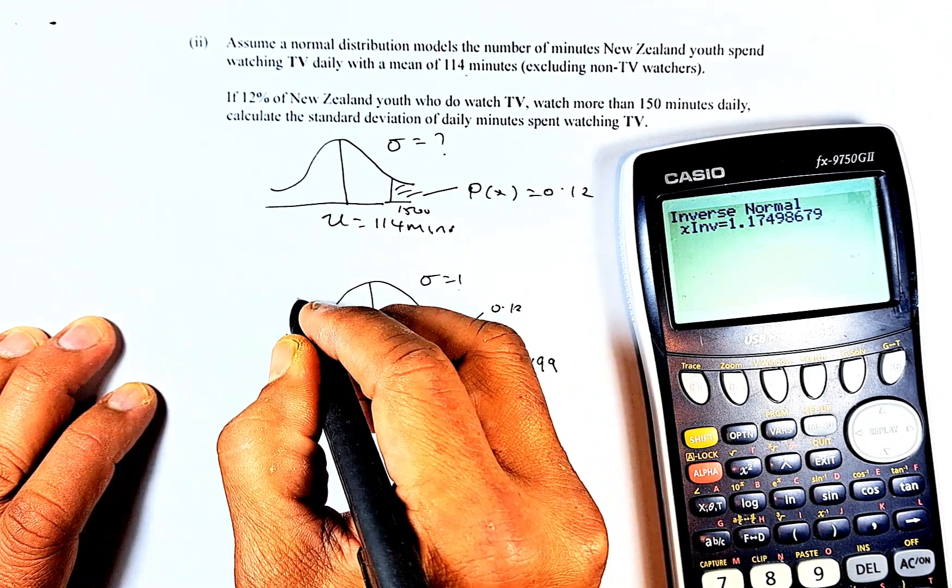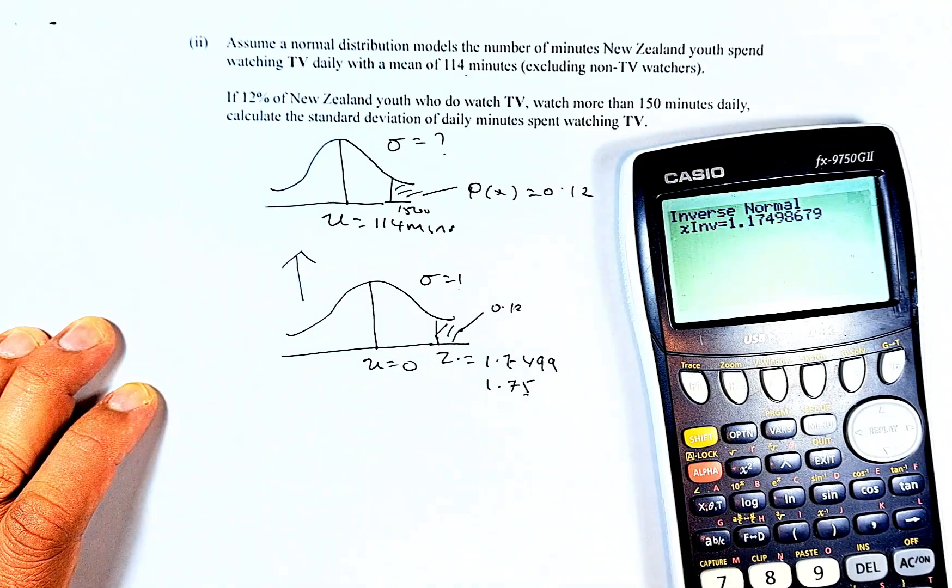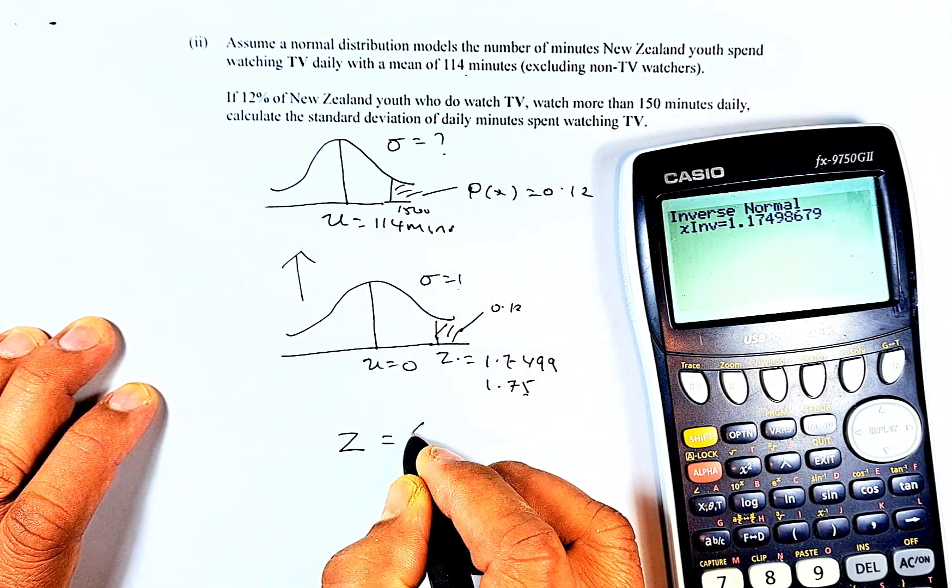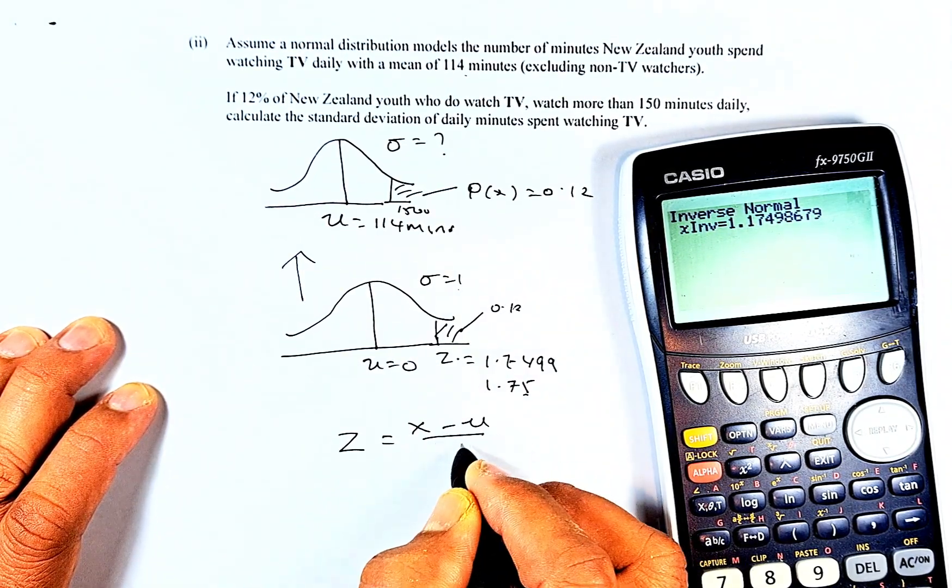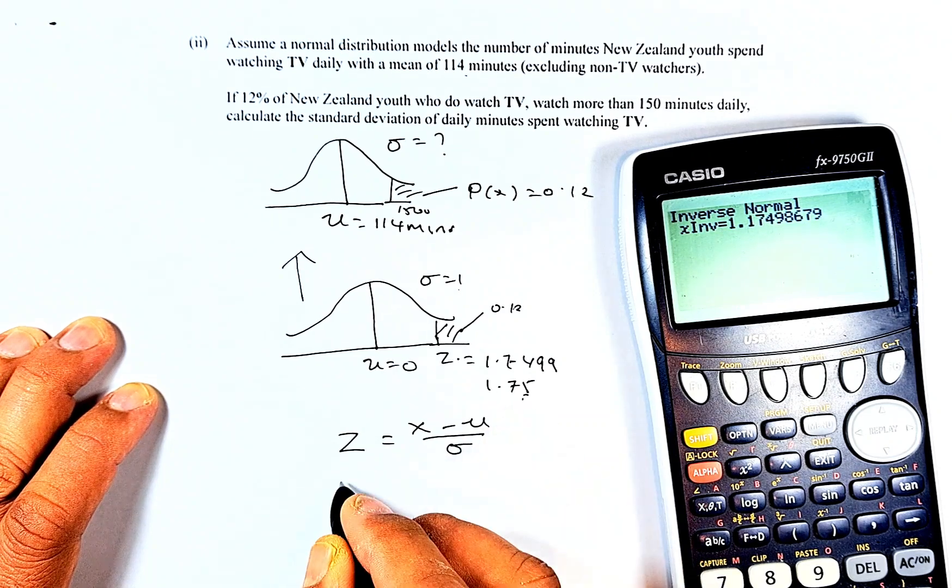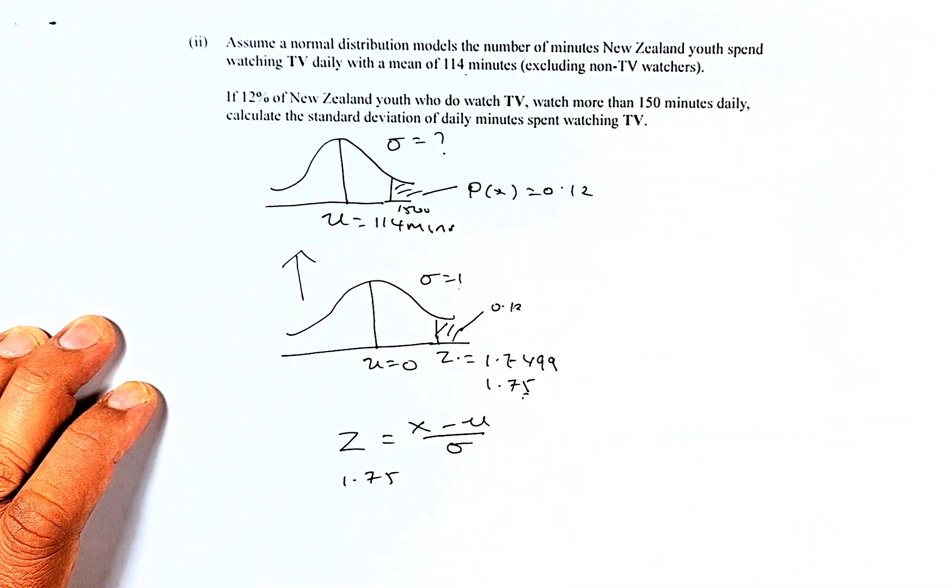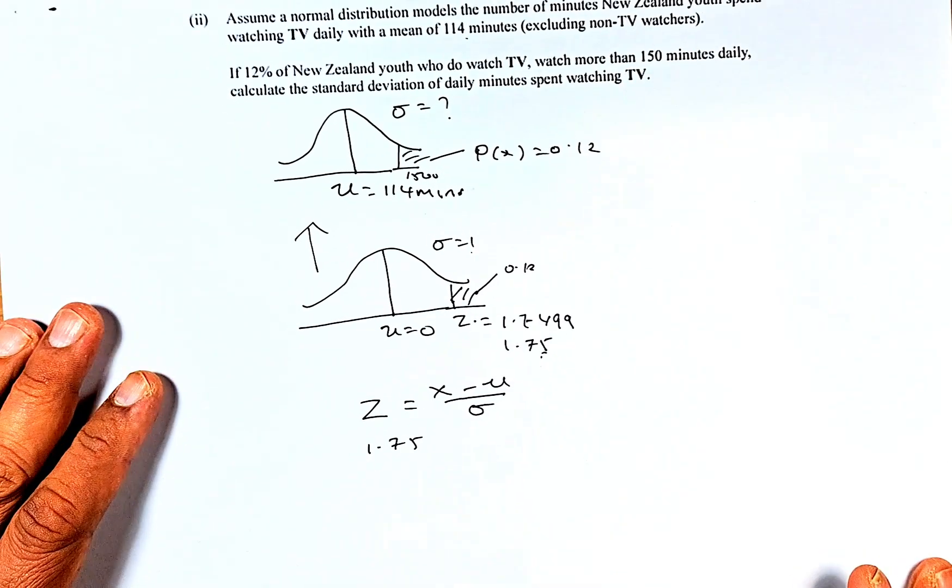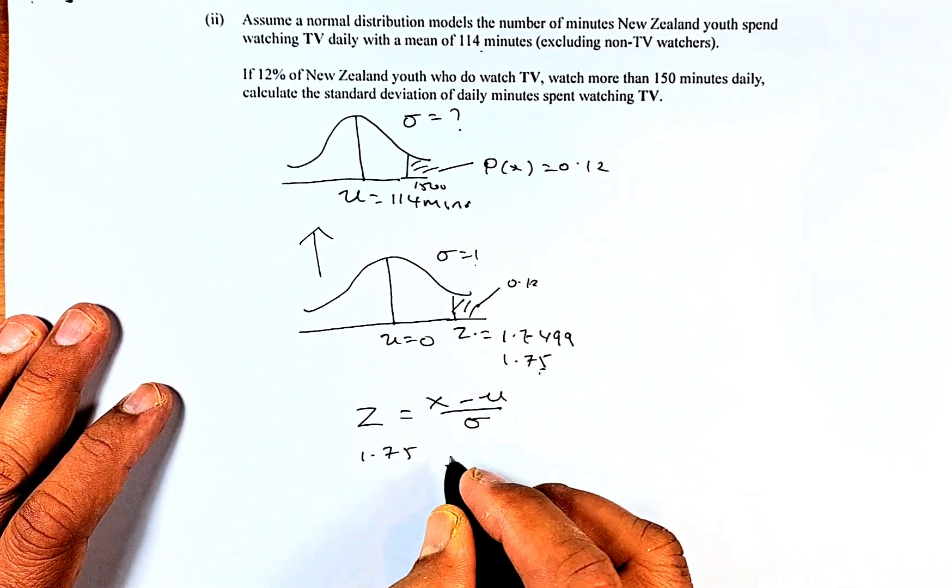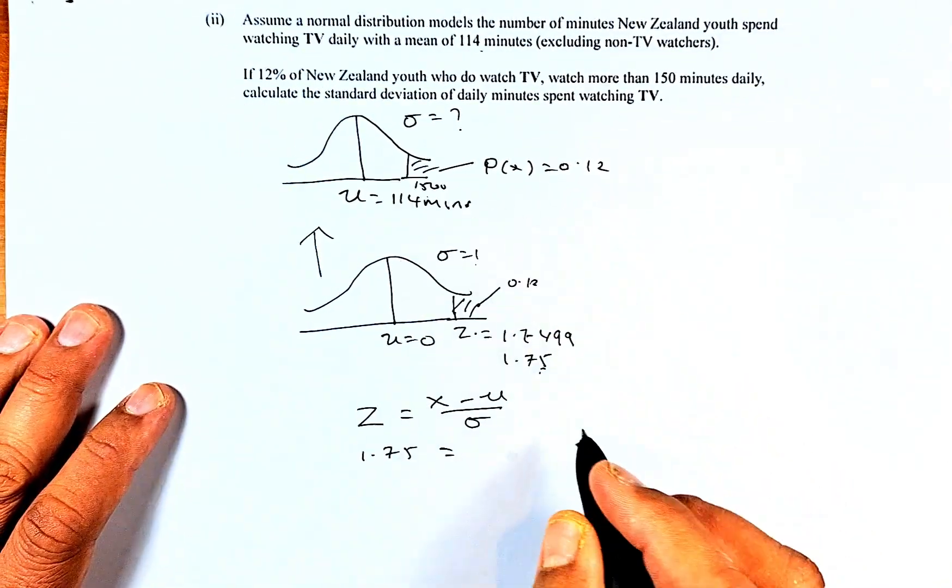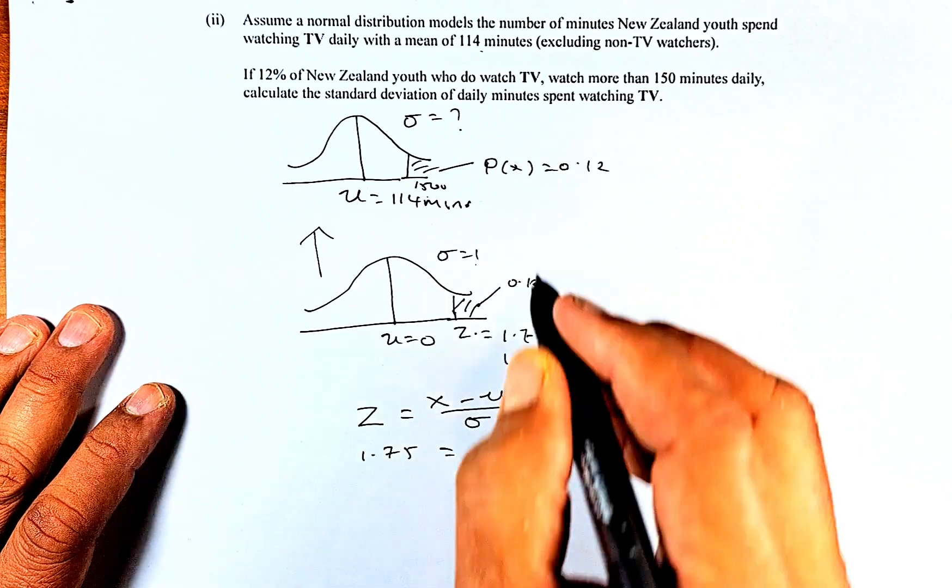The formula is Z equals to X minus mu over sigma. And then the Z is now 1.75. So I'm going to remove this for a while so we can bring it up. 1.75, and X is going to be 150 minutes.